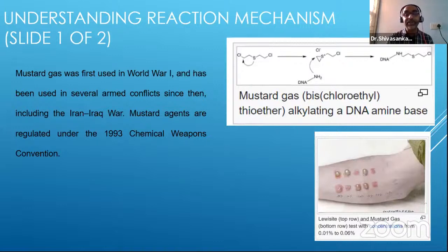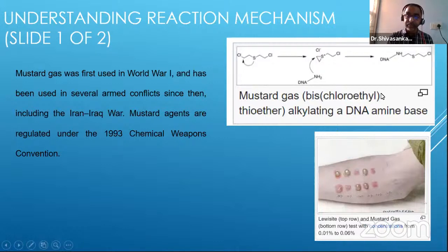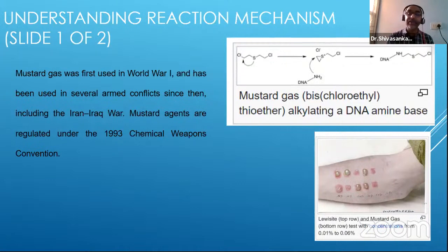If you see the example, you'll see that the Cl minus is being displaced and then it forms a three-membered ring with the sulfur, and the DNA opens up and mustard gas damage is generated. Then there are the blisters which were seen in World War One.